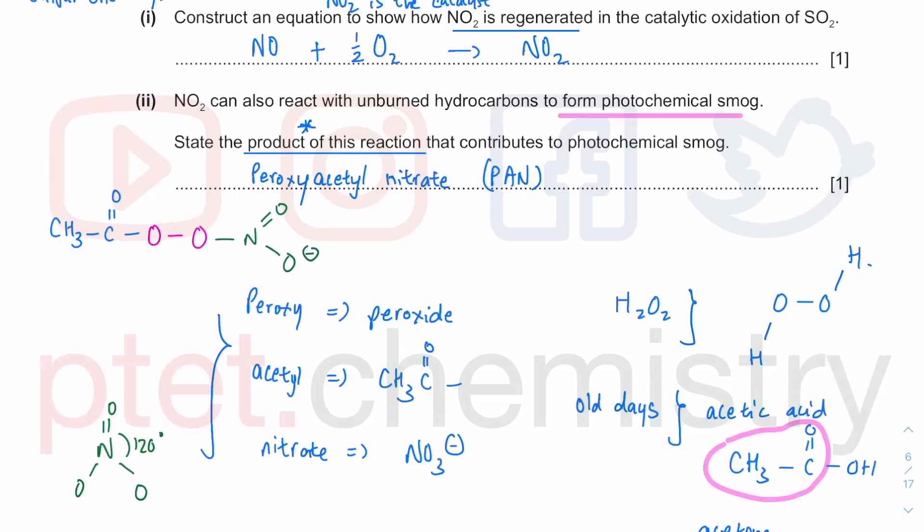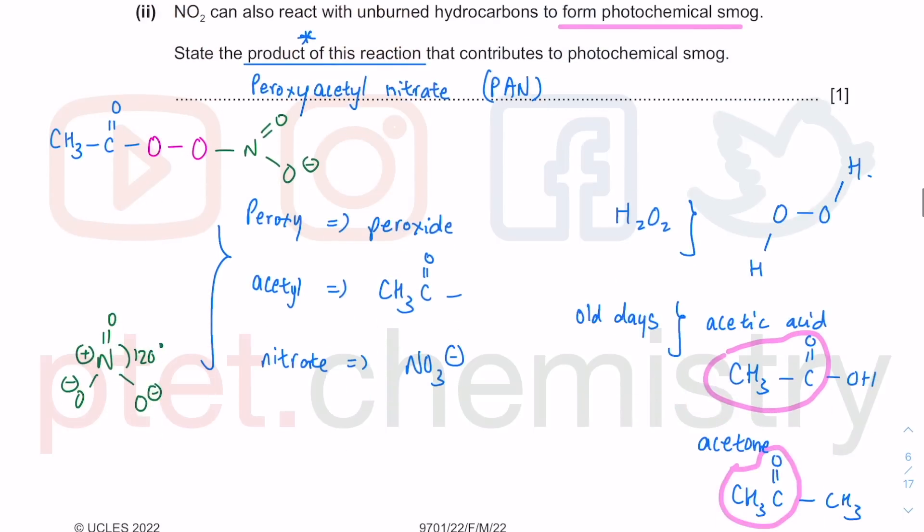A traditional nitrate would look like NO3 minus, trigonal planar, 120 degrees. There's a negative charge on the two oxygen, positive charge on the nitrogen. So nitrogen forms four bonds with a positive charge, and the oxygen forms single bond with a negative charge. Plus one, minus one, minus one. NO3 minus, 120 degree, trigonal planar geometry there. But here the oxygen is part of the peroxide, so this peroxide is actually very prone to free radical reaction.